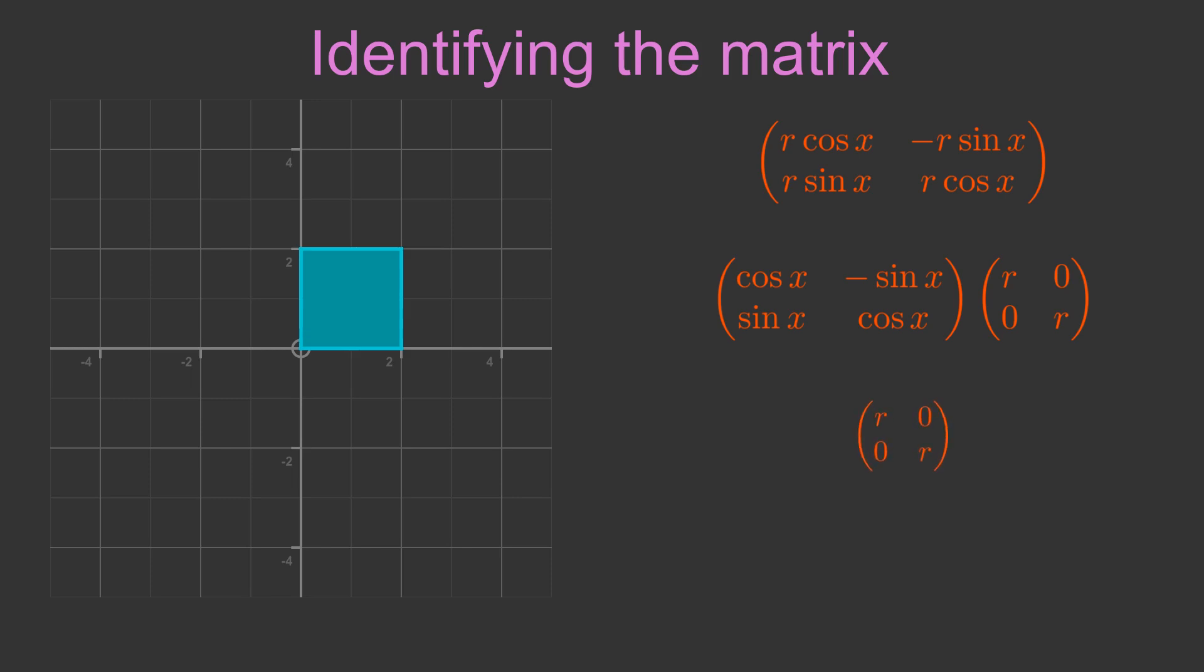The right hand matrix using r is a well known transformation that scales the 2D plane by a factor r. This square illustrates what happens to the xy plane when we apply this transformation.